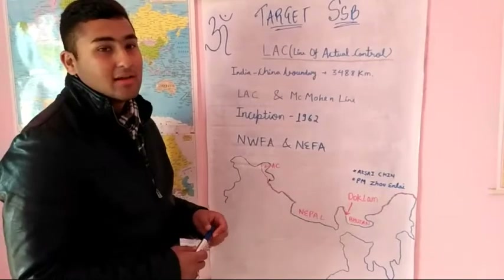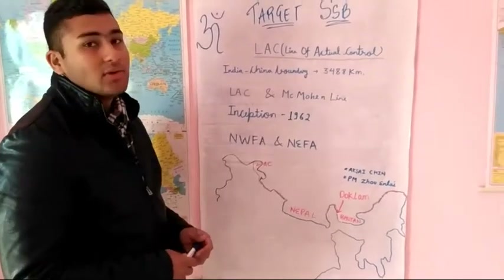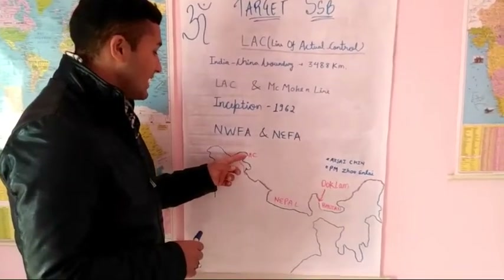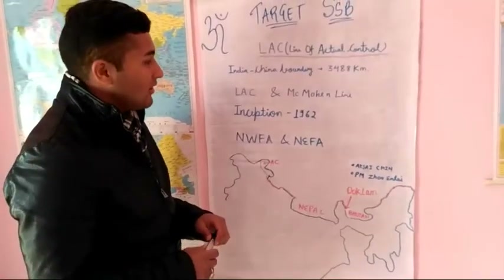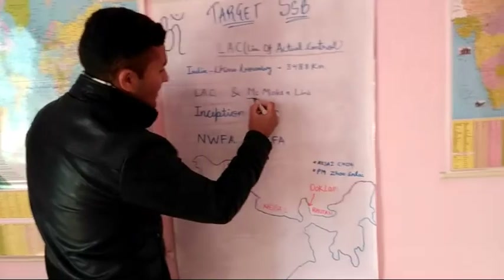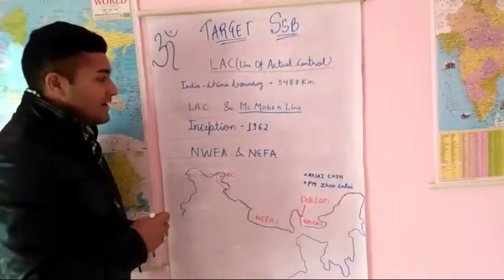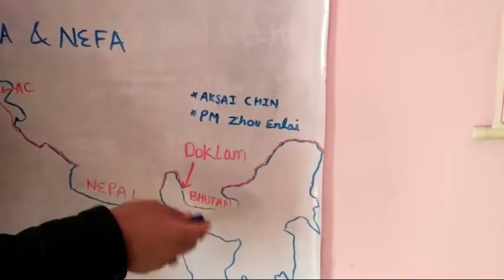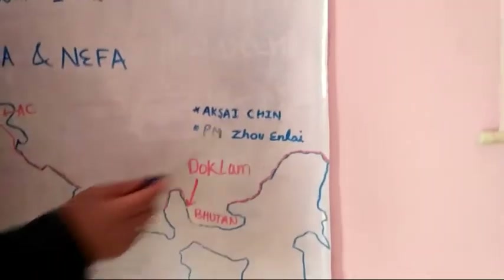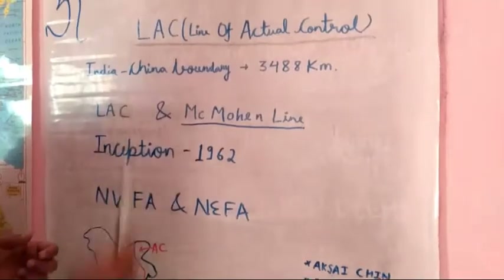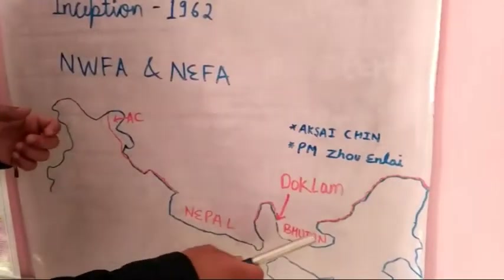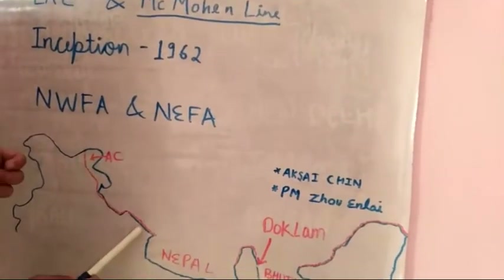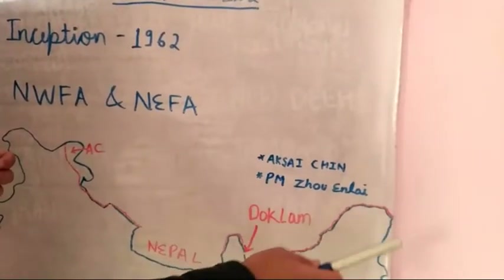The Line of Actual Control got its inception in 1962 and was recognized as the demarcation line between India and China to separate their territories. Earlier, the McMahon Line was also used — it is basically the demarcation line that separates the Indian territory of the North-East with China. After the inception of the Line of Actual Control, it also covers the McMahon Line, and this entire line originates from Jammu-Kashmir, covering Himachal Pradesh, Uttarakhand, Bhutan, and then to Arunachal Pradesh.